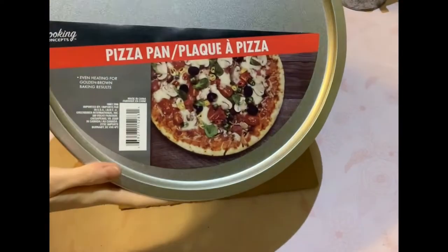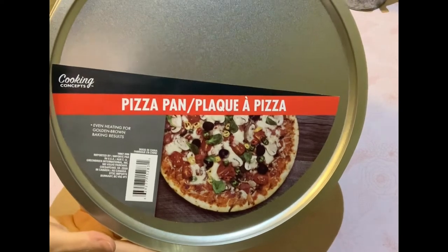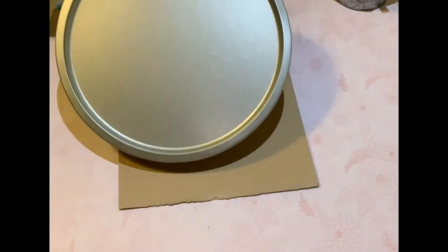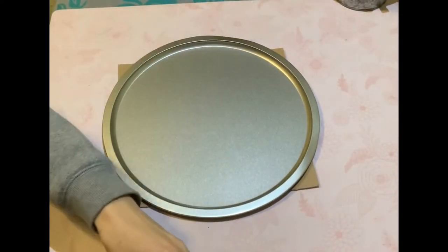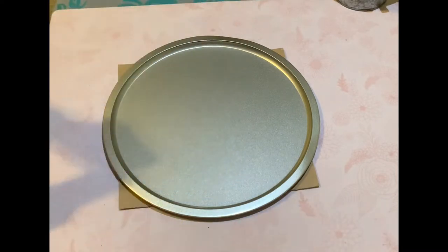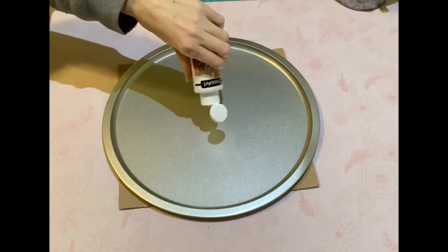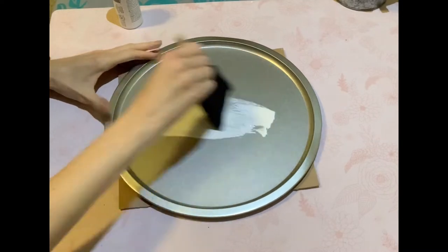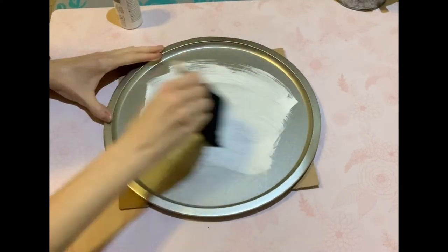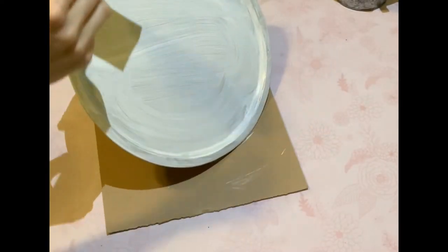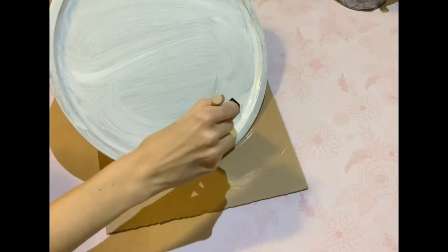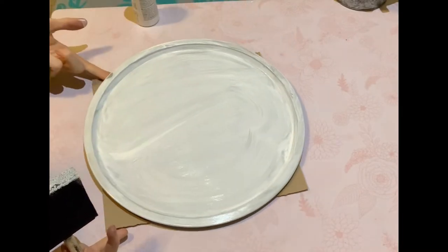For the second one, I'm taking the pizza pan from the Dollar Tree and giving it two coats of white acrylic paint. With acrylic paint you definitely need two coats, whereas chalk paint you might only need one. I needed two to give it a good solid base for my next color. I used my blow dryer to speed up the process.